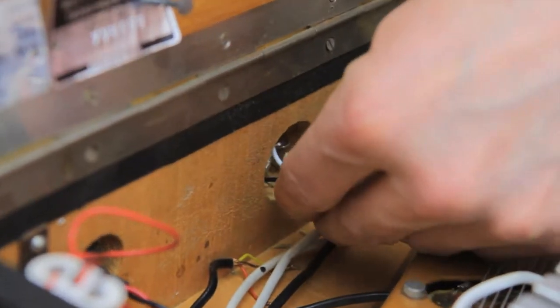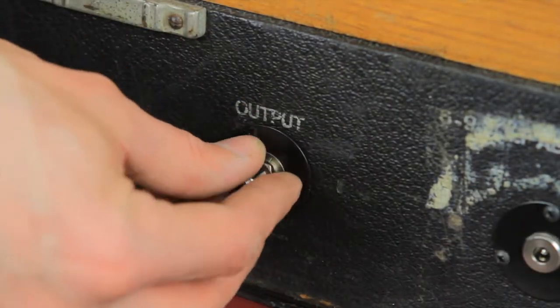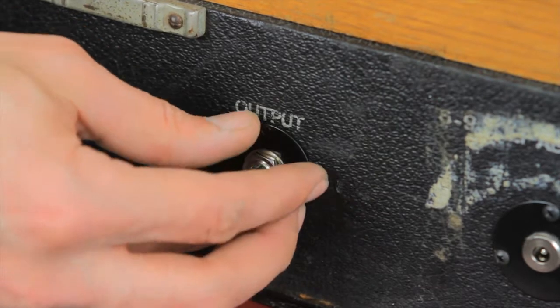Insert the output jack into the base. Secure it to the jack plate with the washer and nut and install the three mounting screws.